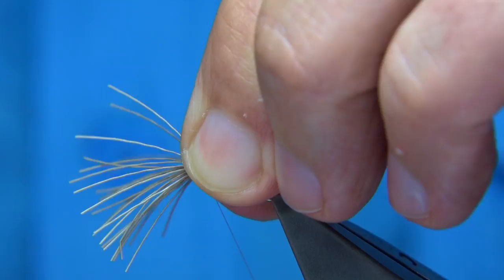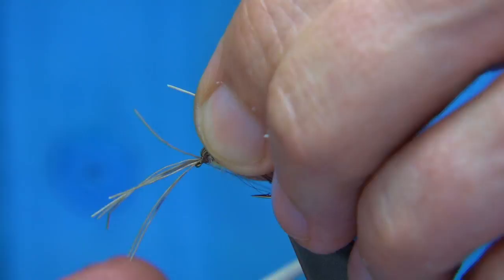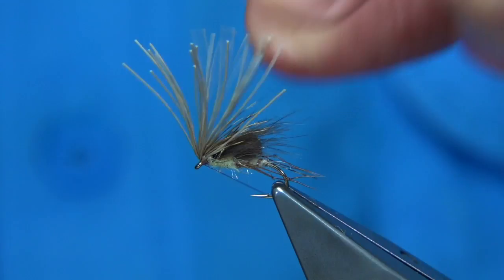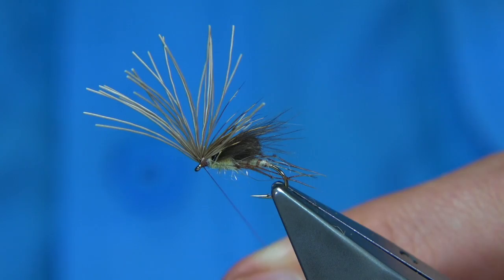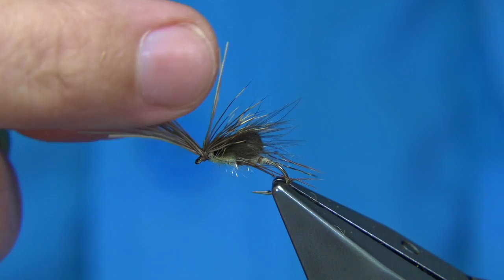And then, what I like to do is pull some of the cut end fibers up. And bring a turn or two of the thread through. And work my way towards the eye of the hook. Now, keep the thread tight. Ignore things at this point. And then, put a finish. And then, we trim away the thread.